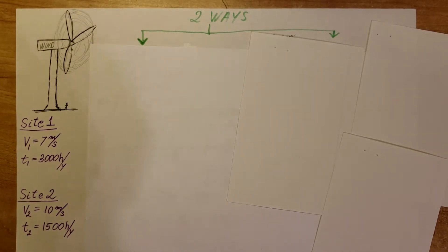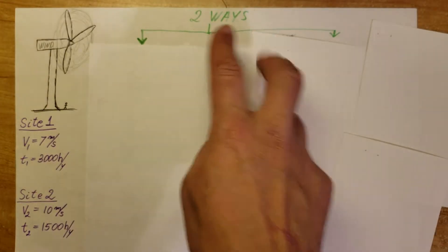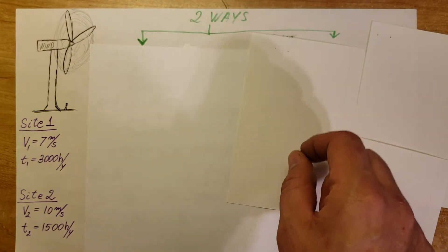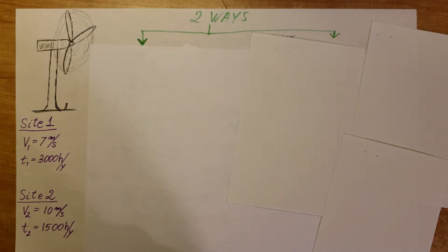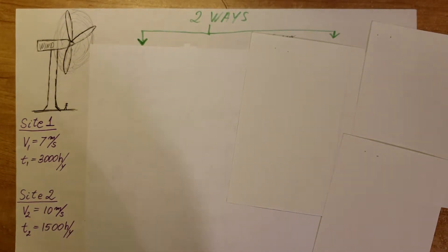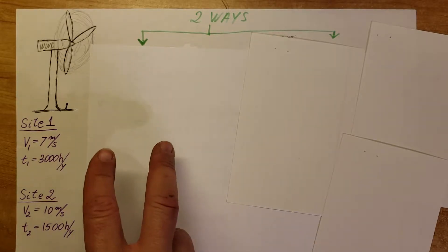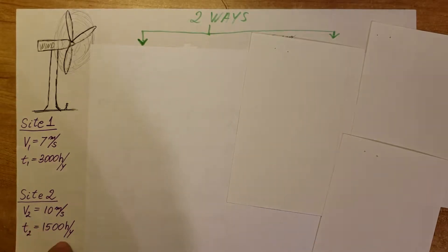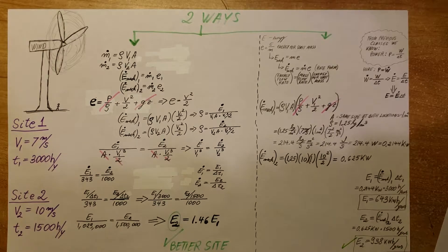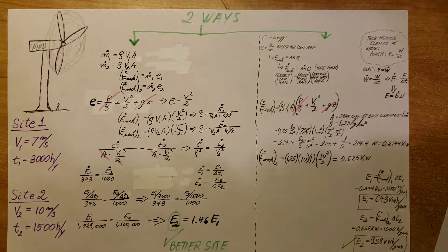I'm going to solve this problem in two different ways. First, I'll actually calculate the value of the power generated over the year. In the second method, I'll just get formulas working where I compare site one to site two and see which one wins. Here's a glimpse of the two solutions if you want to pause the video and take a look.